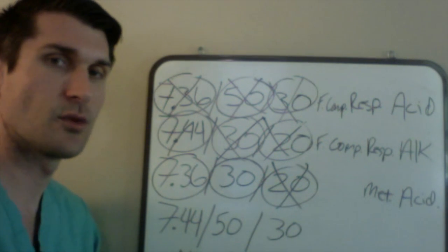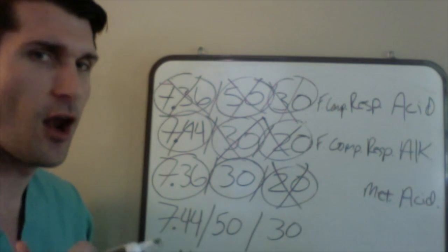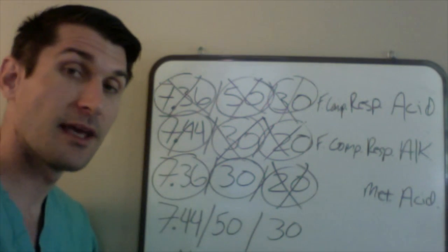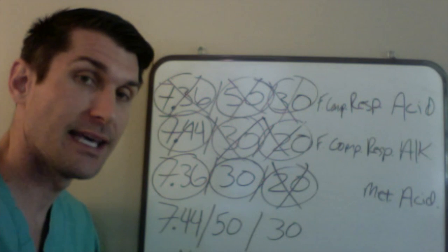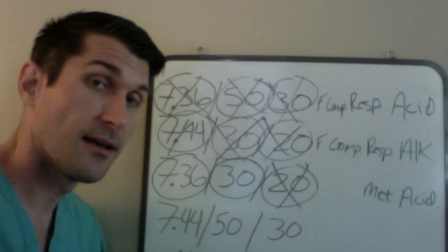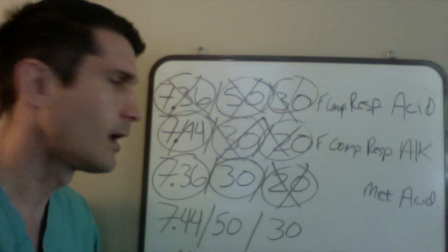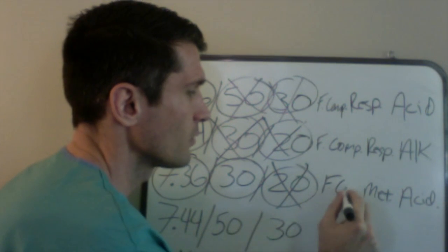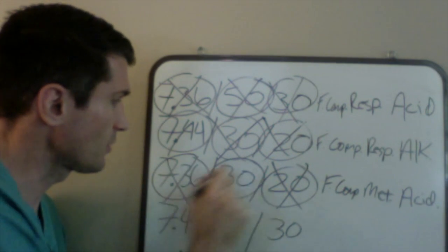Is the CO2 assisting in this situation? Is it compensating for what the bicarb has done? There was not enough bicarb, the pH dropped below 7.35, and then it looks like it came back up to 7.36 — now it's within normal range. Did the CO2 help in that situation? Yes, the CO2 did. The pH was acidic because of the bicarb, so in order to compensate, the acidic CO2 left the situation through hyperventilation or other means, and that helped compensate. Fully compensated means we are within normal range between 7.35 and 7.45.